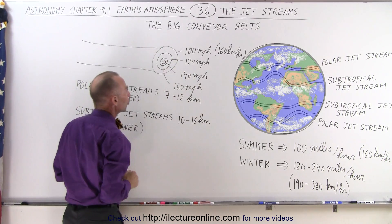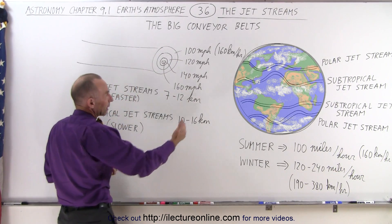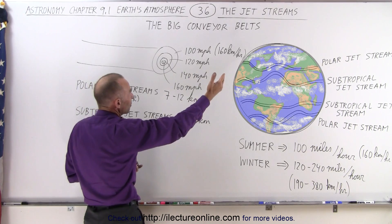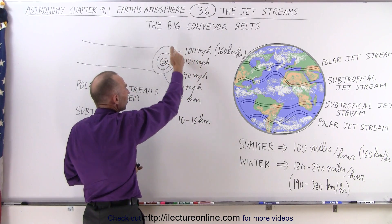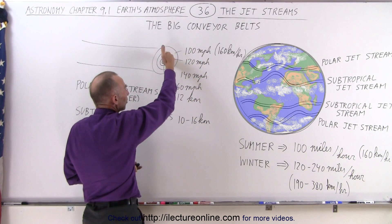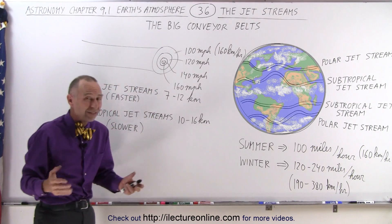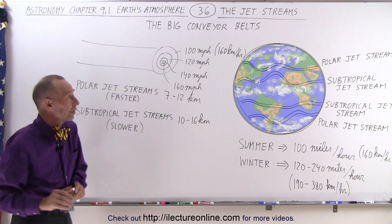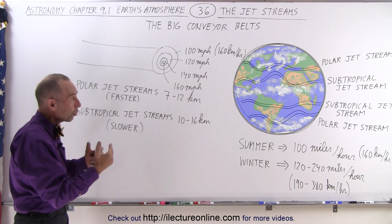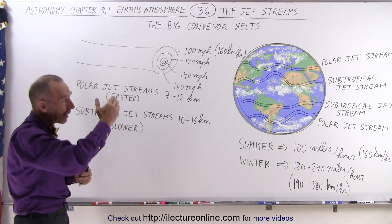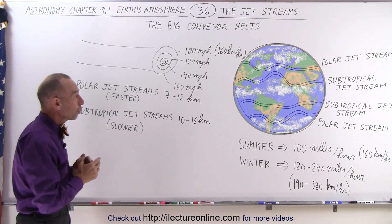Typically a jet stream like the polar jet stream can have speeds of 100 miles an hour towards the edge, and as much as 160 miles an hour towards the center, and even greater than that. And there are four of those that kind of meander around the world.